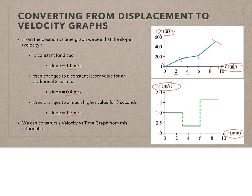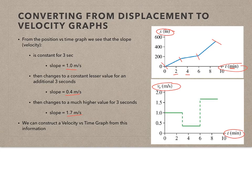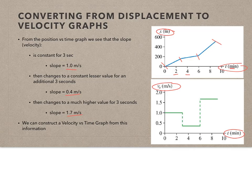So for time 0 to 3 minutes, the slope was 1 meter per second, which means a positive 1 meter per second velocity. My second interval had a slope of 0.4 meters per second between 3 and 6 minutes — a constant 0.4 meters per second positive velocity. Then the last interval has about 1.7 meters per second positive velocity. I've taken the position versus time graph and constructed a velocity versus time graph from it.